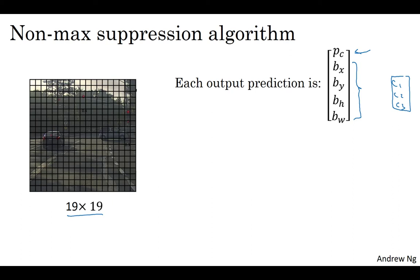Now, to implement non-max suppression, the first thing you can do is discard all the boxes, or discard all the predictions, all the bounding boxes with PC less than or equal to some threshold, let's say 0.6. So we're going to say that unless you think there's at least a 0.6 chance it is an object there, let's just get rid of it. So this discards all the low probability output boxes.